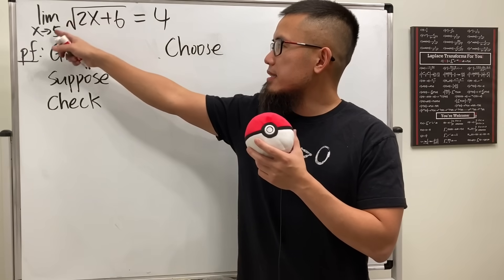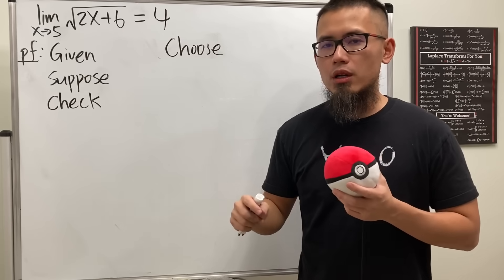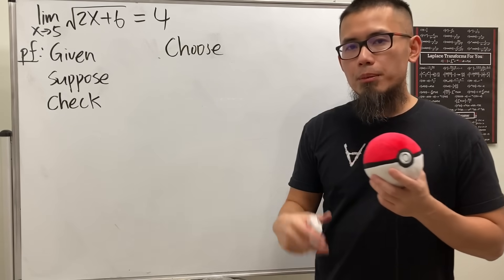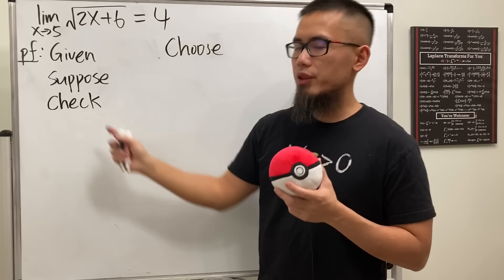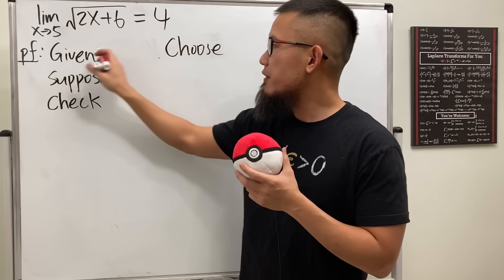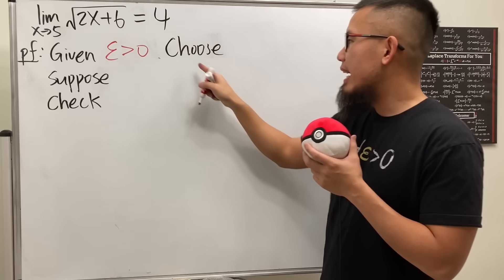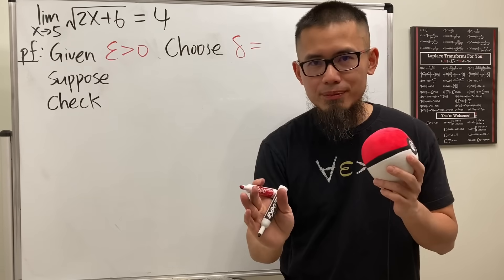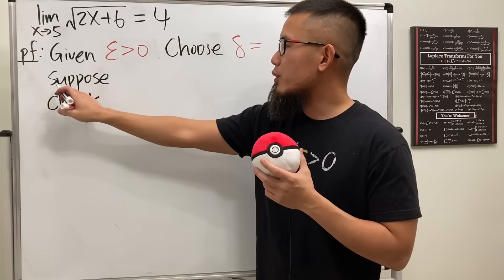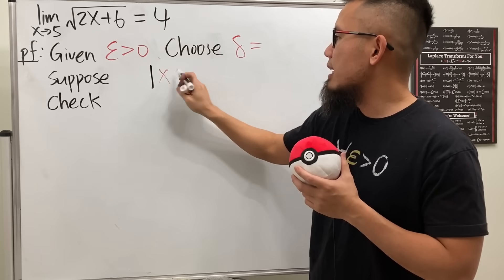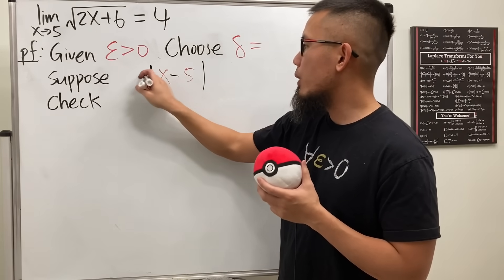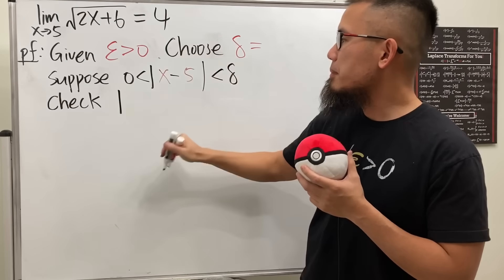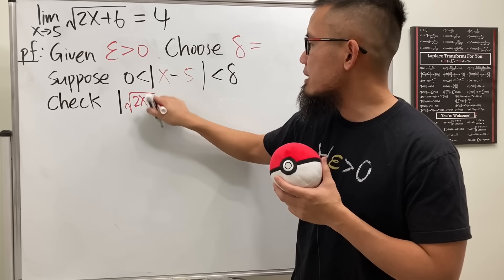Now let's move on to example two: the limit as x approaches 5 of √(2x + 6), which equals 4. To verify the 4, just plug in 5 — it's easy because this function is continuous. For the proof, follow the same format: given epsilon > 0, choose delta equal to something based on epsilon (leave blank for now), suppose |x - 5| is greater than zero and less than delta, and check |√(2x+6) - 4| hoping to show it's less than epsilon.